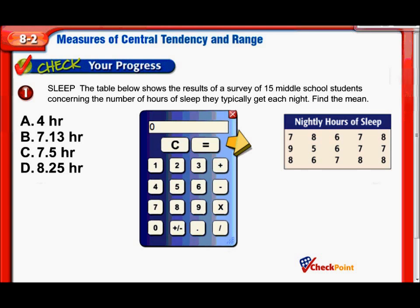So here we're supposed to find the mean of this set of data. There's 15 students and how many hours they sleep each night. Let's get started with this one. Let me add up my numbers. We have 7 plus 8 plus 6 plus 7 plus 8, that's the first row, plus 9 plus 5 plus 6 plus two 7s. Now the last row, 8 plus 6 plus 7 plus two 8s. Okay, that equals 107. So now what we do is we take that 107 and we need to divide it by 15.